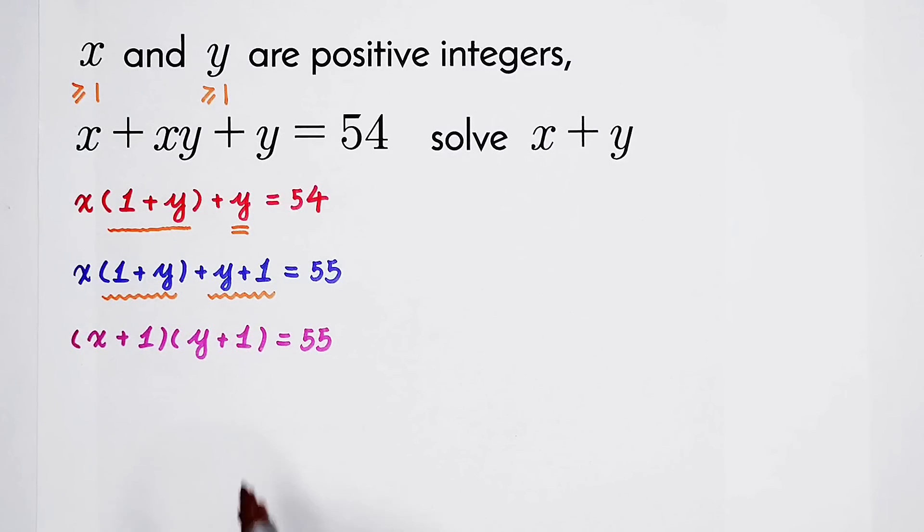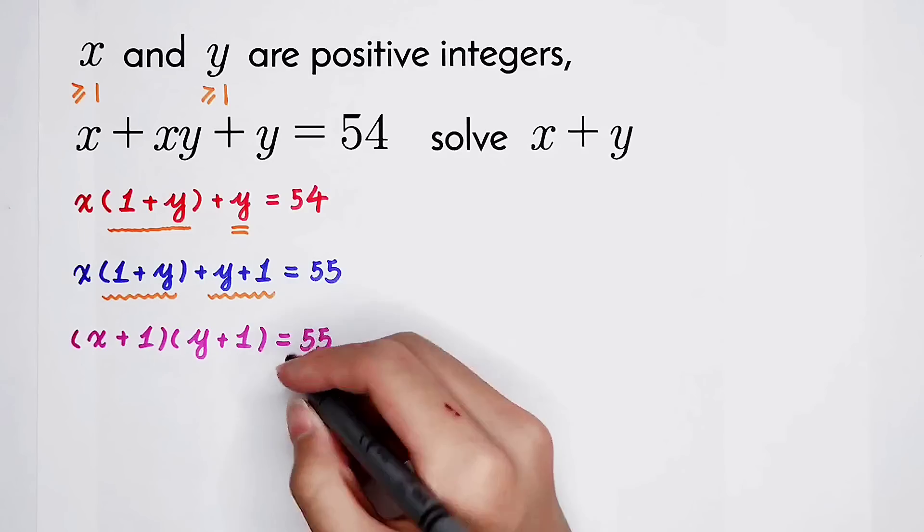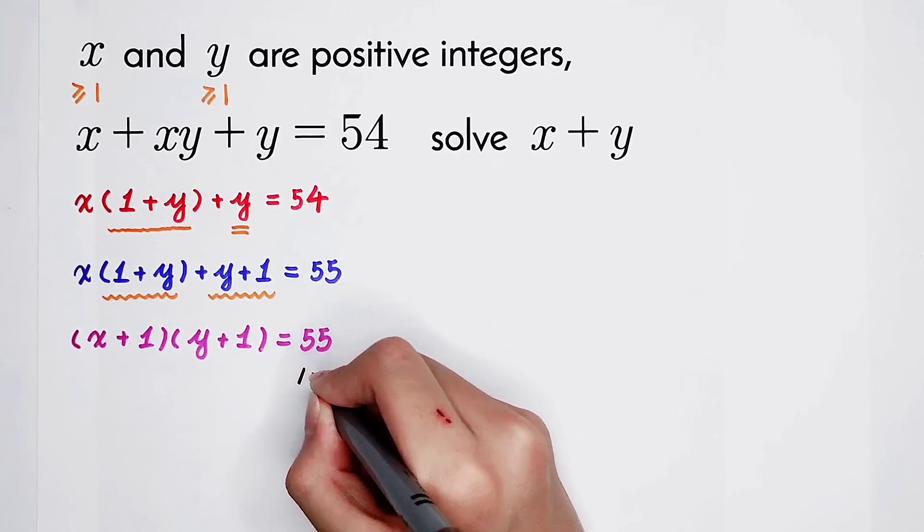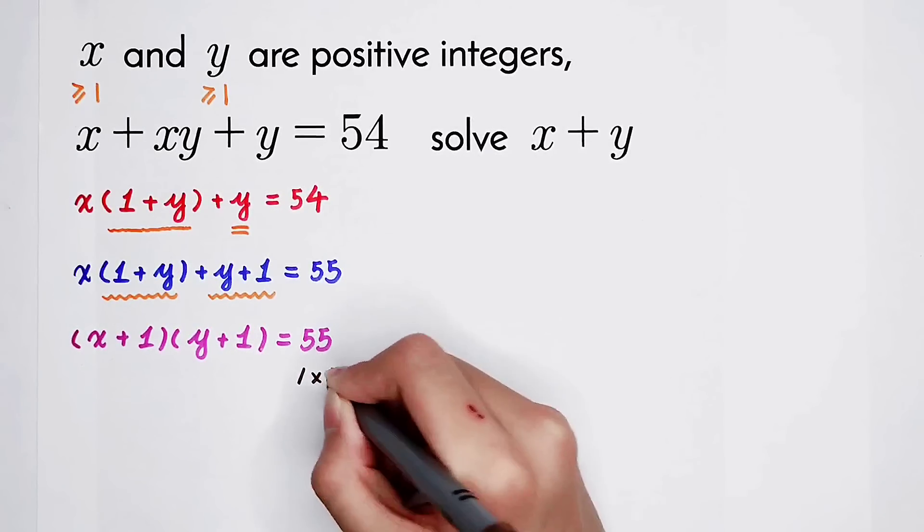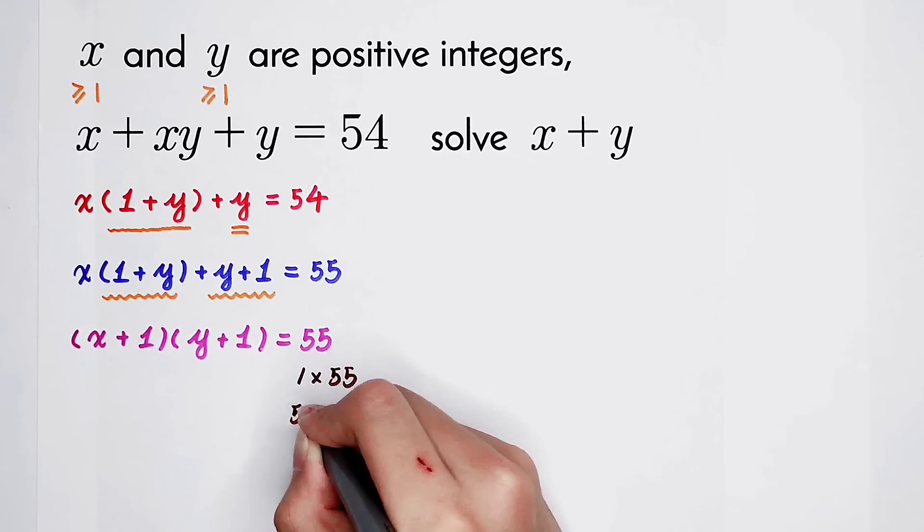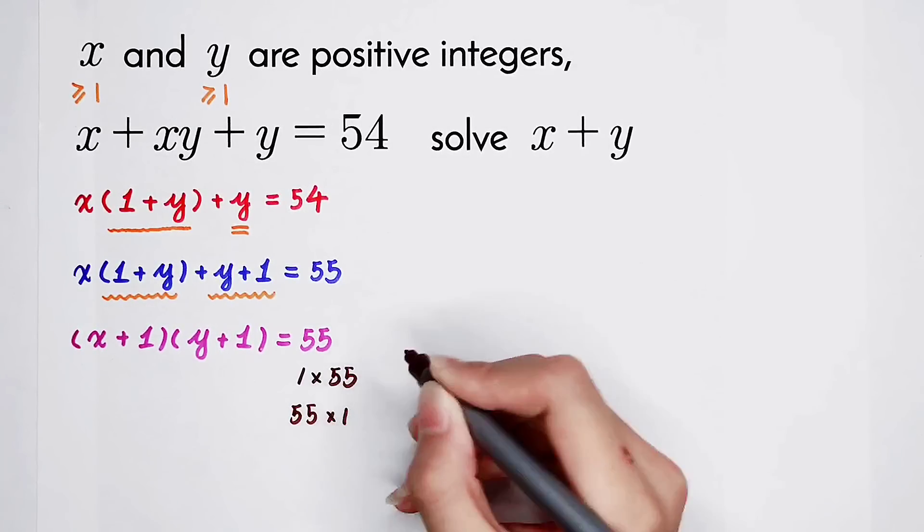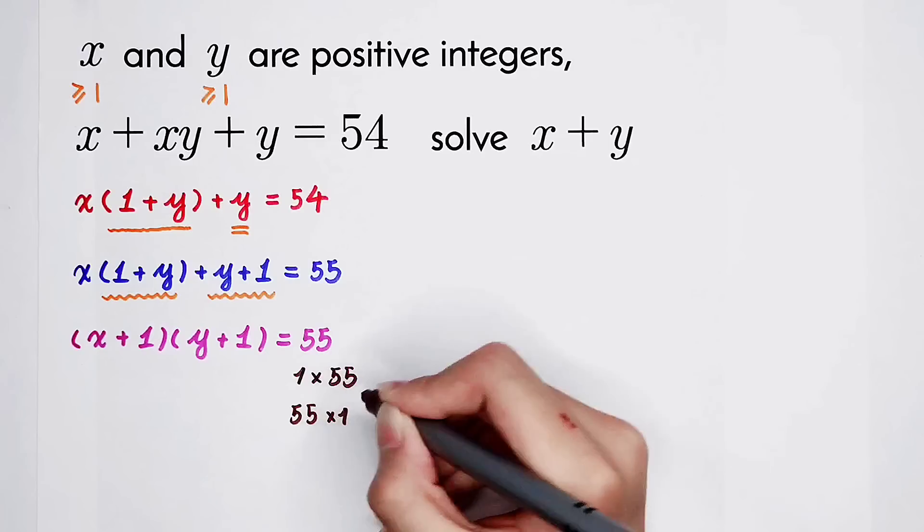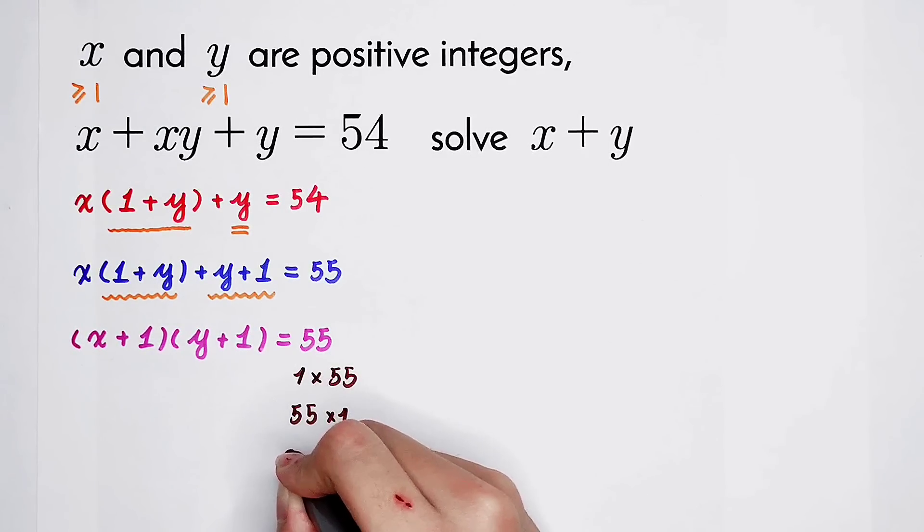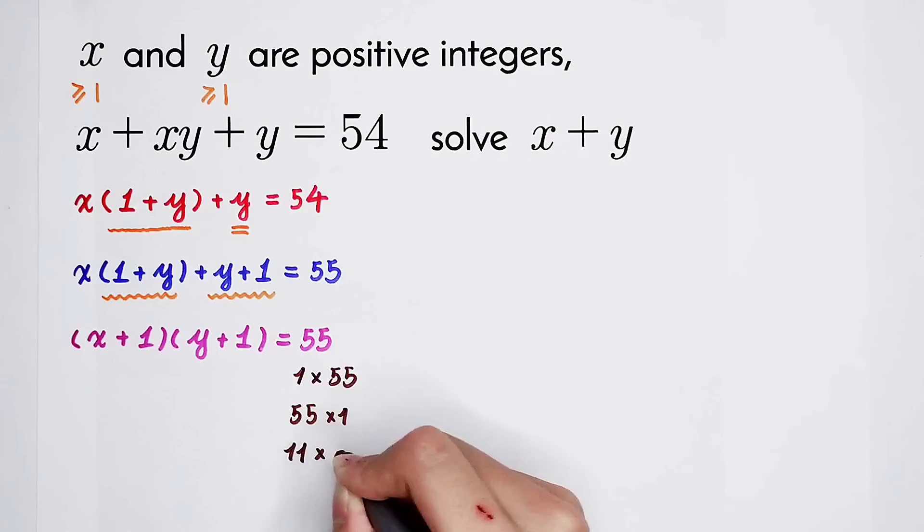Now, we find the factors of 55. Because 55 can be written as 1 times 55 itself, 1 times itself and itself times 1. And then it can also be written as 11 times 5, and 5 multiplies by 11. There are four cases. But are they correct?